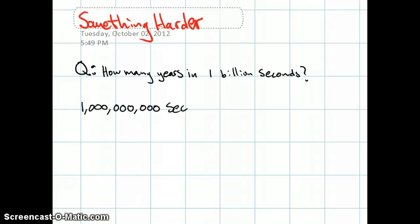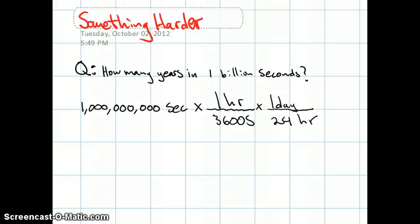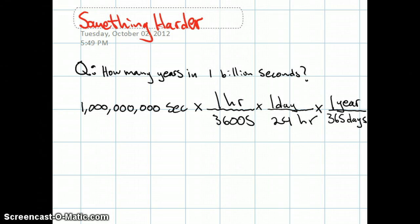The first conversion factor we'll multiply by will convert from seconds to hours. Since seconds is our given unit, we need seconds in the denominator of our conversion factor. 3,600 seconds equals 1 hour. Next we convert to days by multiplying by the conversion factor 1 day over 24 hours. Note that the quantities in the numerator and denominator of the second conversion factor are equivalent. Our final conversion factor is to multiply by 1 year over 365 days.